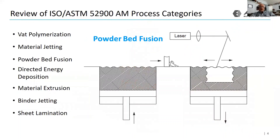Another major part of this chapter is to talk about how we categorize and survey all the common commercial additive manufacturing processes. This is done traditionally worldwide using the ISO ASTM 52900 standard, which is the standard for terminology for additive manufacturing. It lists seven current categories of classification, classified typically based on the feedstock shape and/or the binding mechanism that binds the feedstock together to create the part.